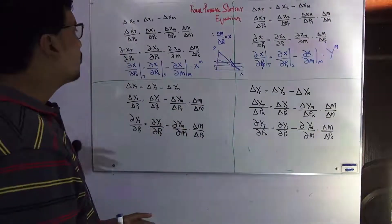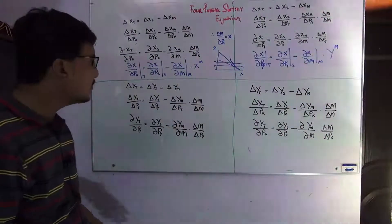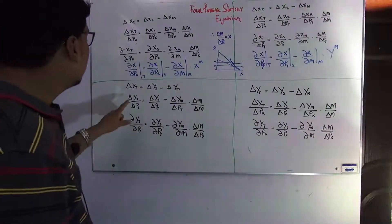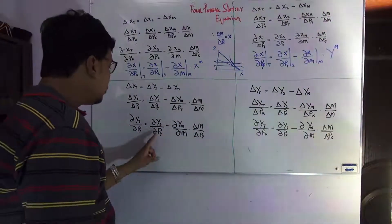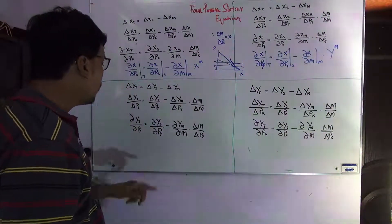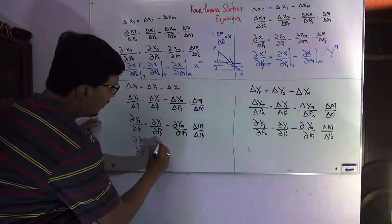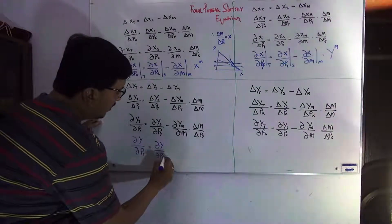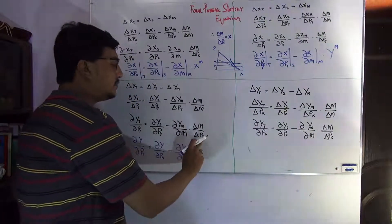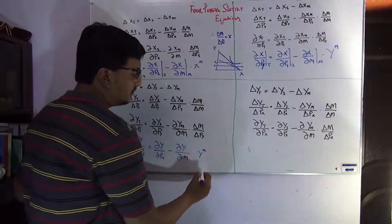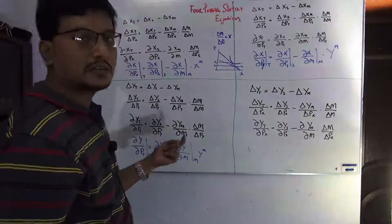The third equation is the own price effect for commodity Y with respect to PY — the change in total impact, substitution effect, and income effect. We introduce the term delta M over delta M, rearrange, and convert the change signs into partial derivatives. Finally, we write the equation: the change in Y with respect to the own price PY equals the change in Y with respect to the own price (substitution) minus the change in Y with respect to income. The Shephard's Lemma gives the demand function of Y with respect to its own price. This is the total impact, substitution effect, and income effect — the third Slutsky equation.